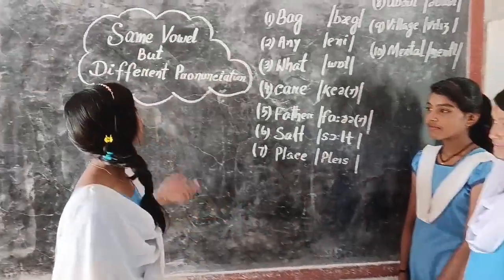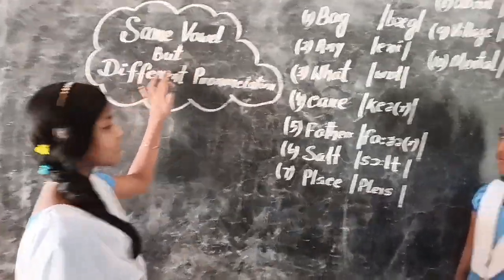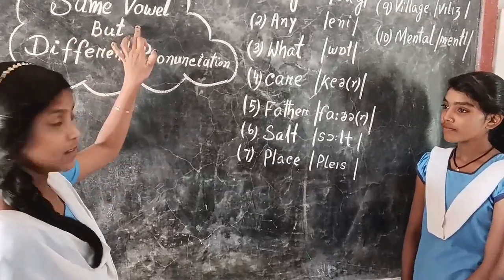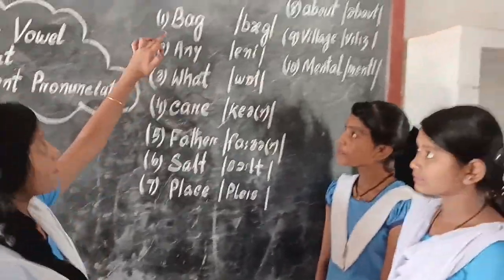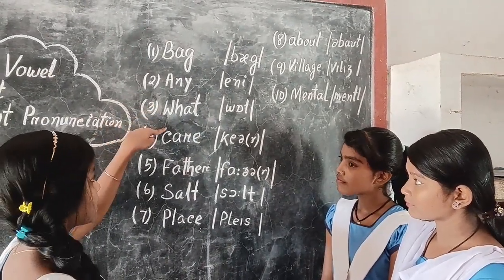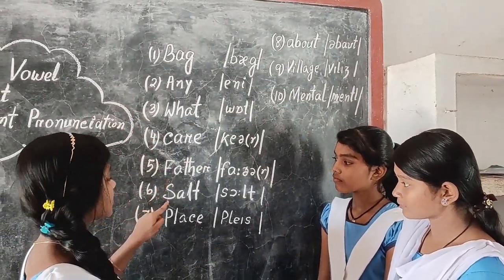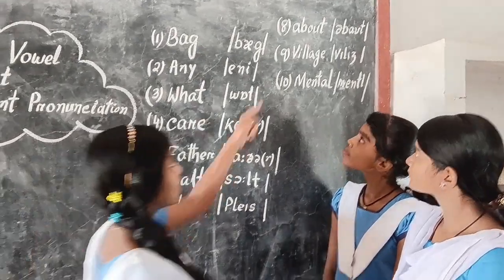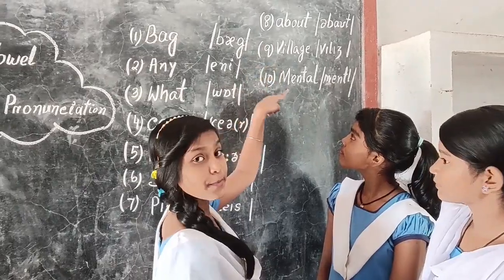Friends, look — same vowel but different pronunciation. Bag, any, what, care, father, salt, place, route, village, mountain.